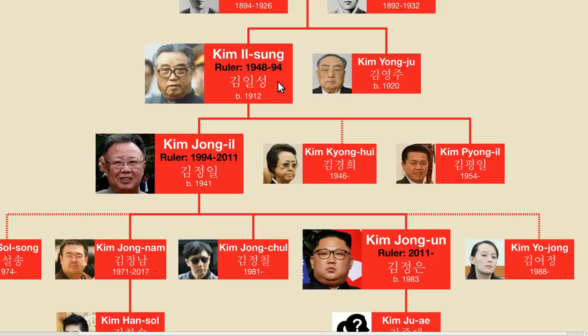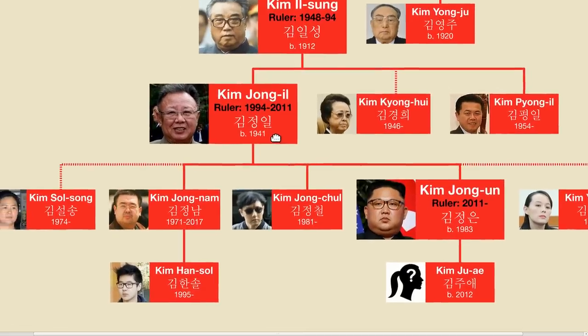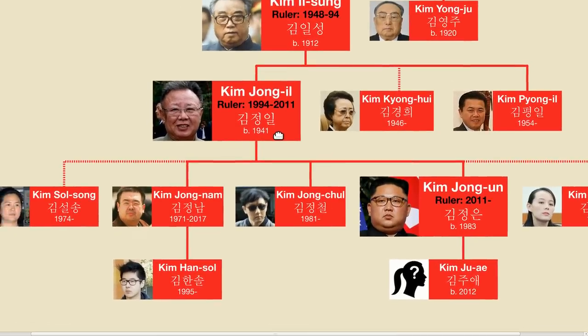Kim Il-sung ruled for almost 46 years and was succeeded by his eldest son, Kim Jong-il. Kim Jong-il then ruled for over 17 years before being succeeded by his son, Kim Jong-un, who is the current leader of North Korea.